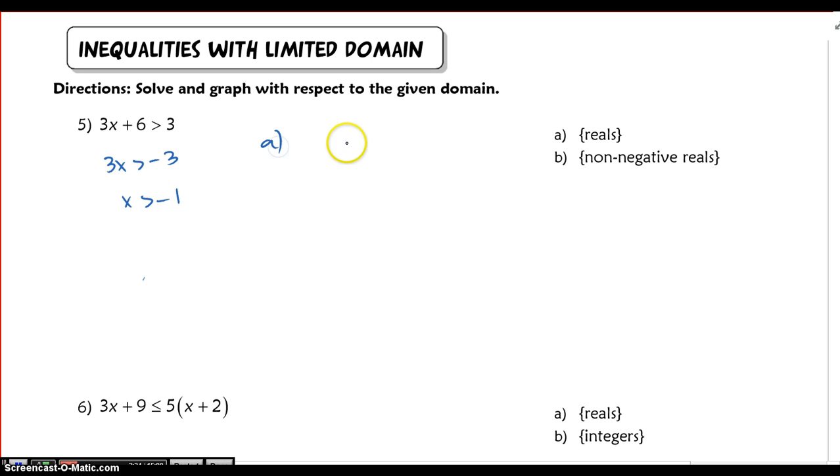So when I graph this with respect to my limited domain here, which happens to be all reals, that means that I can just graph this like normal.